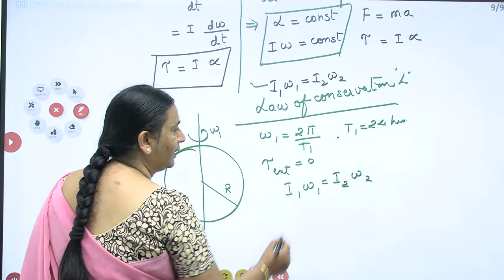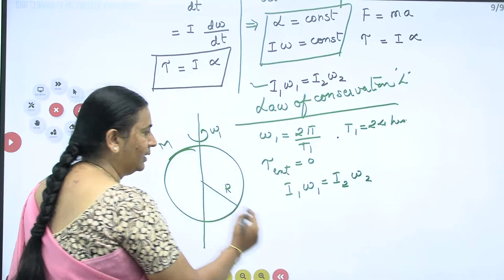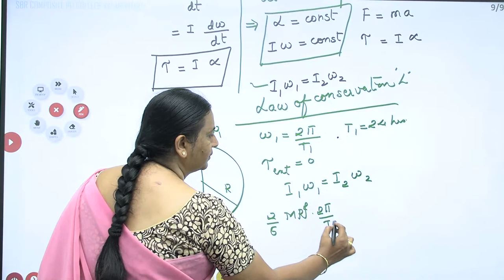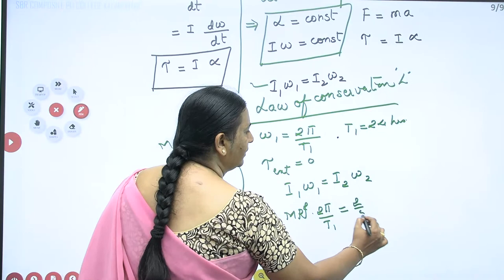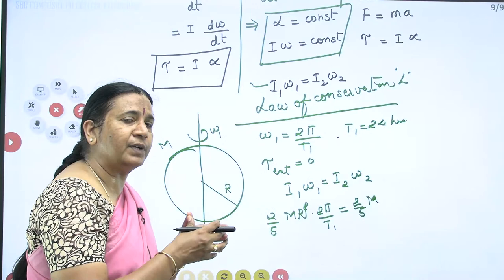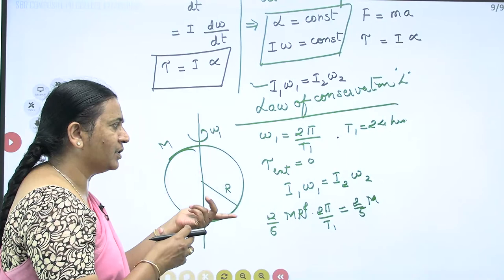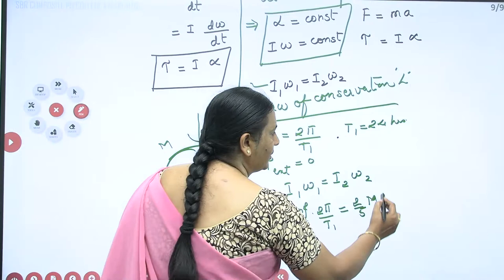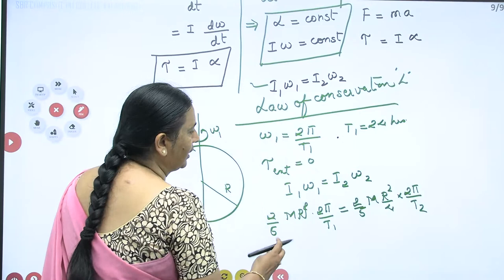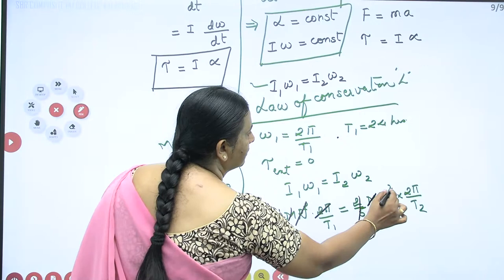What is I₁? Since it is a solid sphere, our formula is (2/5)MR². So I₁ω₁ gives (2/5)MR² × (2π/T₁). After shrinking, it remains a solid sphere with no change in mass, but R₂ = R/2. So I₂ = (2/5)M(R/2)² = (2/5)M(R²/4). Setting I₁ω₁ = I₂ω₂, all the common terms cancel.